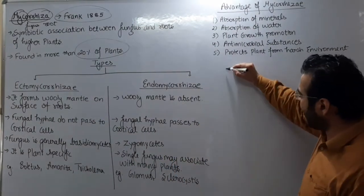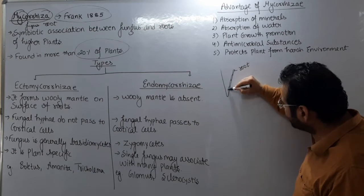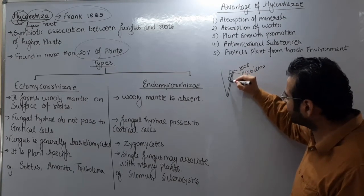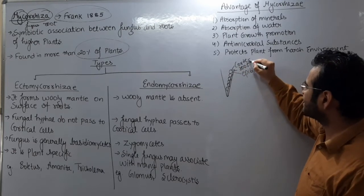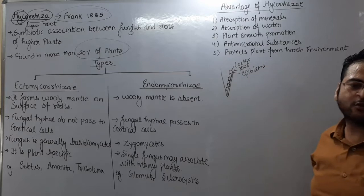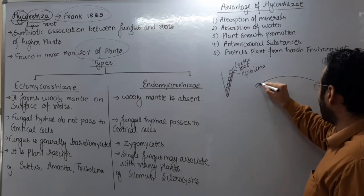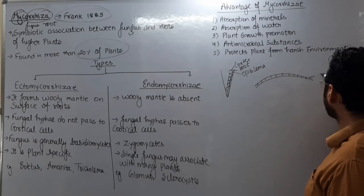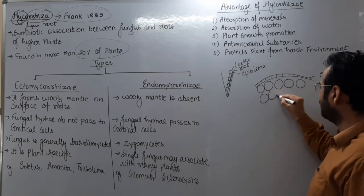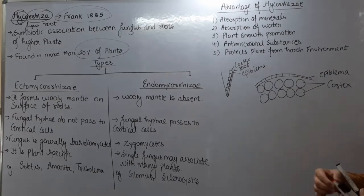Is ko samajhne ke liye aapko yeh diagram dekhna hoga. Agar hum plant ki root ko dekhein, root ke andar jo outermost layer hai, this is called epiblema, and after that we have cells called cortex. Plant ki root mein jo bahar ki taraf cells hain, they are called epiblema, then we have cells called cortex, jin mein cells thoda loosely arranged mil sakte hain.